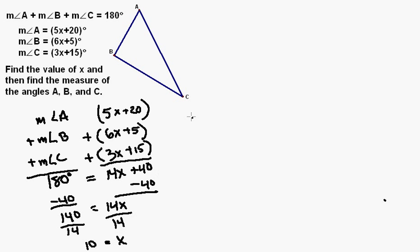Now that we know the value of x, let's go ahead and substitute that into each of the expressions to find the angle measures. 5 times 10 plus 20 is equal to 50 plus 20, which is equal to 70 degrees.